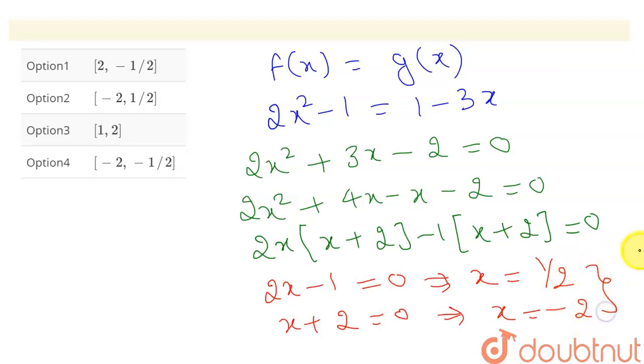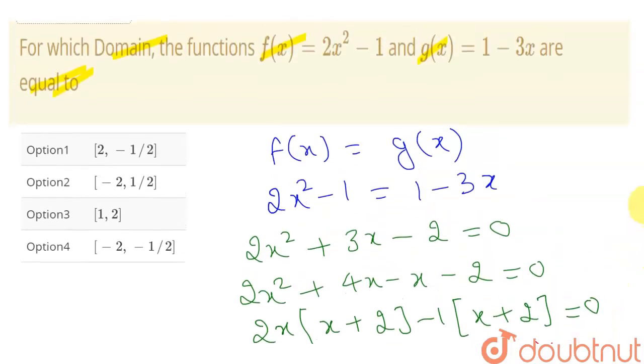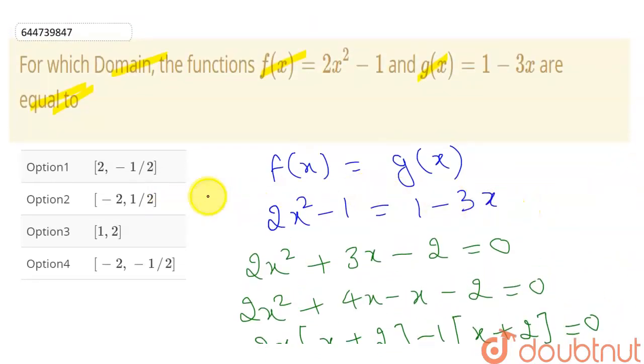So these two will be included in the domain of our functions at which these two functions are equal. As these two are algebraic functions, their domain is all set of real numbers. So we don't have to check any condition after finding these points.